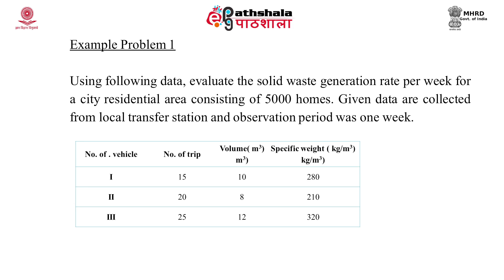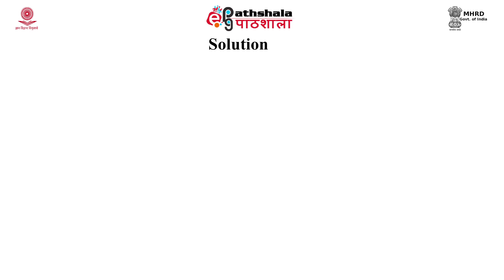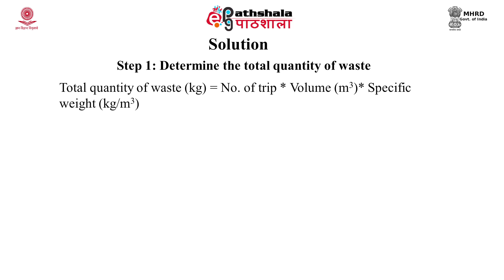An example problem is solved here to calculate the amount of waste generated from a residential area consisting of 5000 residents. Based on the number of vehicles, number of trips, volume, and specific weight, the waste generation can be calculated. In step one, the total quantity of waste in kilograms = number of trips × volume of waste (m³) × specific weight of waste (kg/m³). For the first vehicle — 10 m³ volume, 15 trips, specific weight of 280 kg/m³ — the total is 15 × 10 × 280 = 42,000 kg of waste.